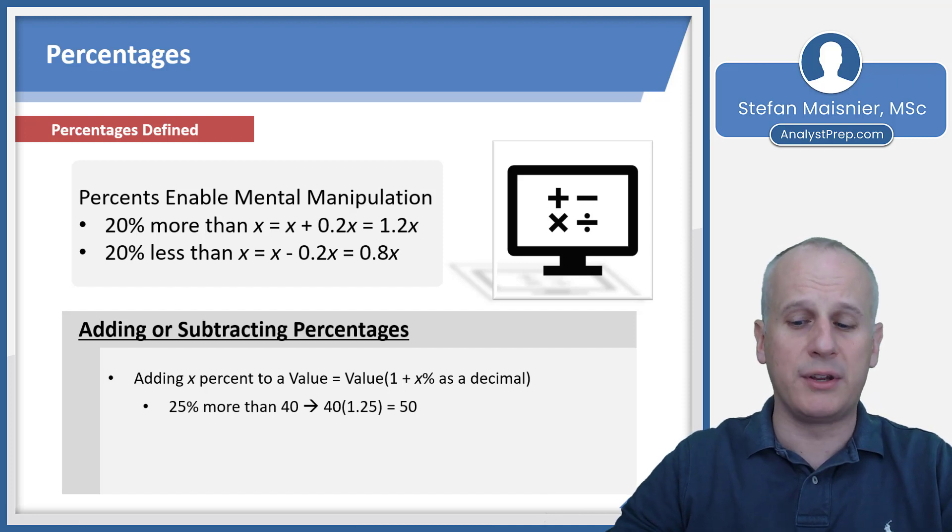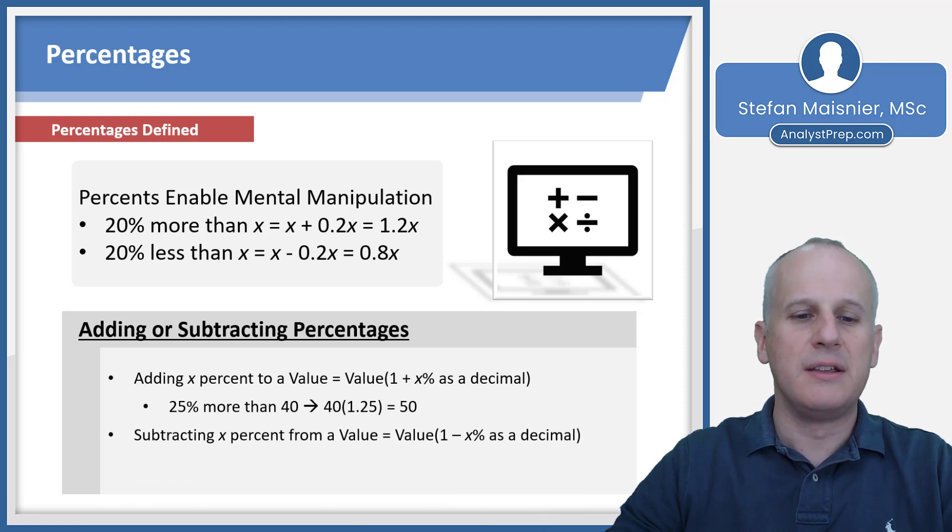Practicing this kind of mental manipulation and doing it multiple ways can really help aid in your flexibility and approach on exam day. You can also subtract x percent from a value by taking that value and multiplying it by 1 minus x percent as a decimal. So 25% less than 40 is 40 times 0.75, which is 30. You could do 40 times 3 quarters because 0.75 would be 3 quarters as a fraction.